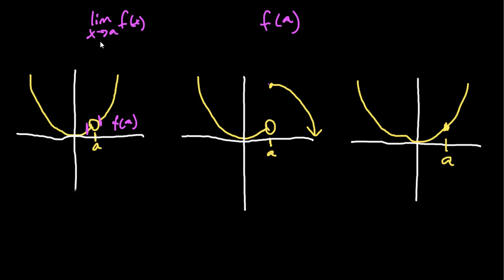The same situation applies to the second graph. Eyeballing the graph, we see that f(a) is defined at a point up here, but there's a hole where we're discontinuous. Our limit actually does not exist, since the limit from the left side approaches one point and the limit from the right approaches a very different point. So in this case we have a defined f(a), but the limit as x approaches a does not even exist.